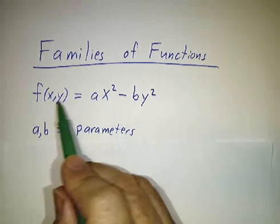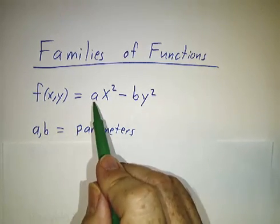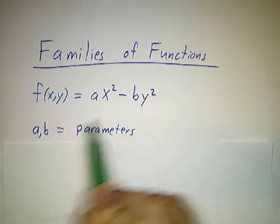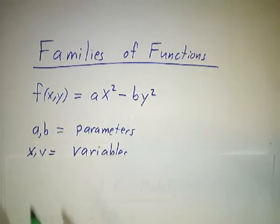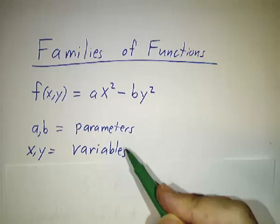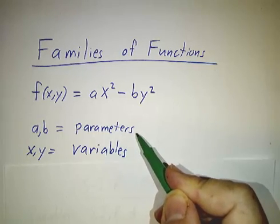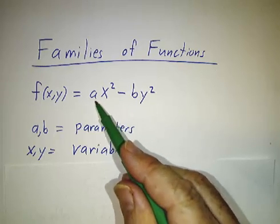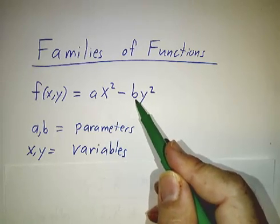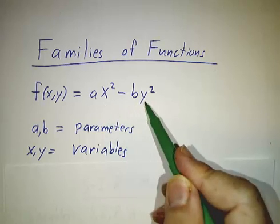So this looks like f depends on four numbers, a, x, b and y, but really there's a difference between x and y, which are variables, and a and b, which are parameters. For any one particular function, a is just a constant, b is a constant. And x and y are the things that are changing.